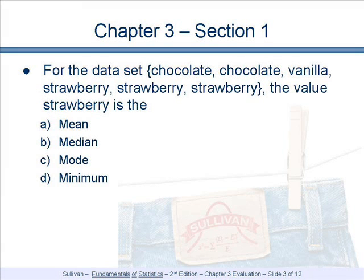For the dataset chocolate, chocolate, vanilla, strawberry, strawberry, strawberry, the value strawberry is the mean, median, mode, or minimum.